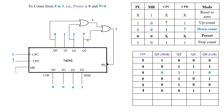One more down count operation: it is 0110. Input to the PL is still equal to 1. Further, it is 0101 — input to the PL is still equal to 1. One more down count operation: it is 0100. Input to the PL is still equal to 1.